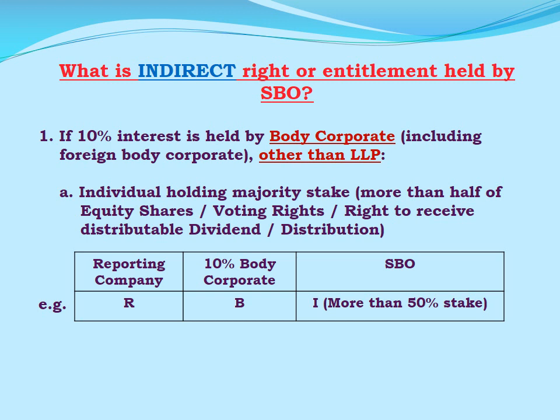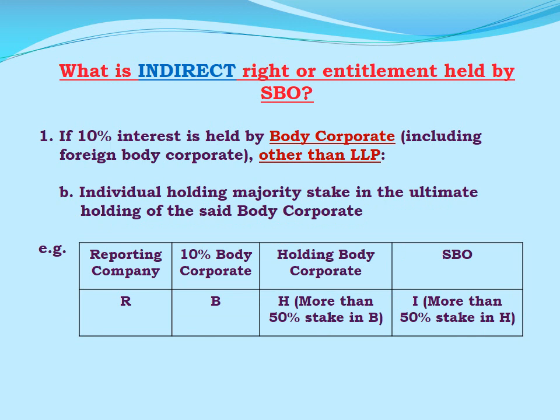What is indirect right or entitlement held by a significant beneficial owner? If the above-mentioned 10% interest is held by any body corporate including a foreign body corporate other than LLP, then the SBO shall be an individual holding majority stake. Majority stake is defined as more than half of equity shares or voting rights or right to receive distributable dividend or any other distribution in the said body corporate. So if R is a reporting company having B, a body corporate holding 10% interest in R, then I, being an individual holding more than 50% stake in B, shall be the significant beneficial owner.